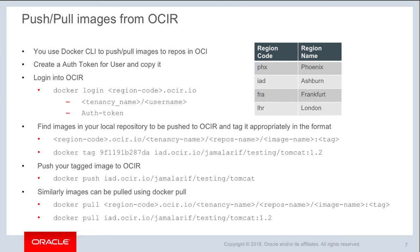The first step is to create an authentication token for your user, which is how you log in to the Docker v2 APIs registry service. Once you have the authentication token, you log in with the command 'docker login' followed by the region code dot ocir dot io. It asks for your tenancy name as the username and your authentication token as the password. After that, it's just regular Docker commands to push and pull images.